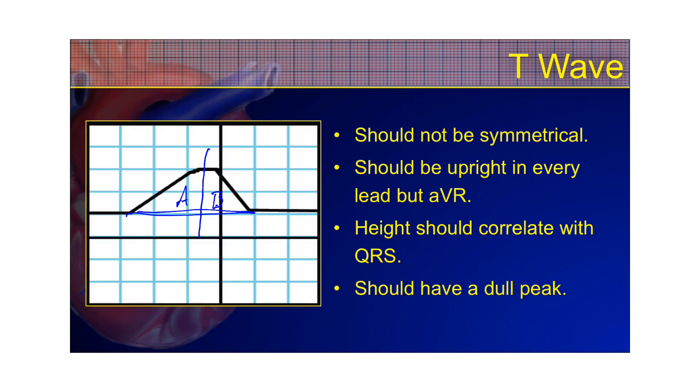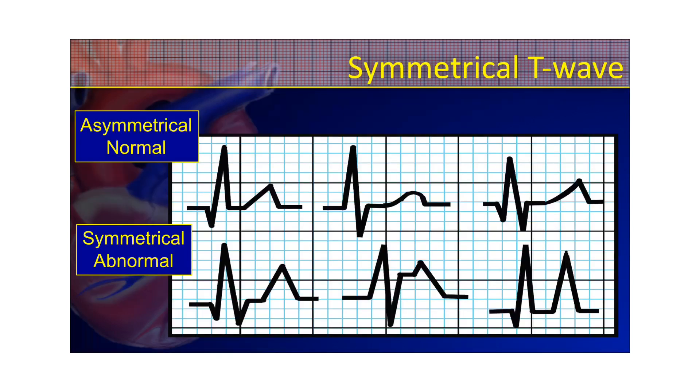Additionally, the T-wave should be upright in every lead except for maybe AVR. And the height should correlate with the QRS. So the bigger the QRS, the bigger your T-wave, especially if it's in the opposite direction. And it should have a dull peak. It shouldn't be peaked and sharp. It should be dull on the top. So if you were to touch the top of it, you wouldn't prick your finger.